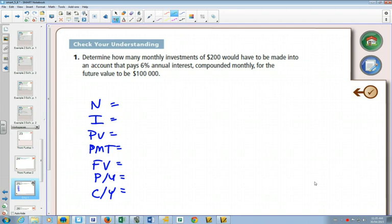So stuff that we know. Interest rate is an easy one, 6%. Compounded monthly makes our compounded monthly 12. We're making monthly investments, so our payments per year are 12.